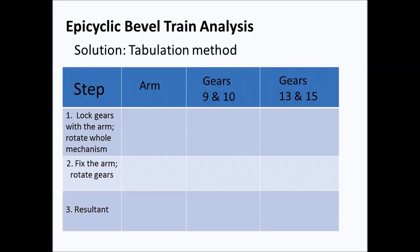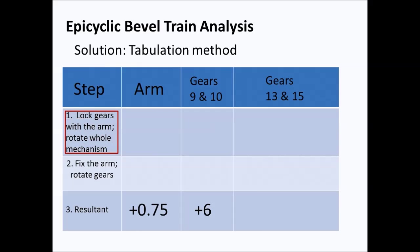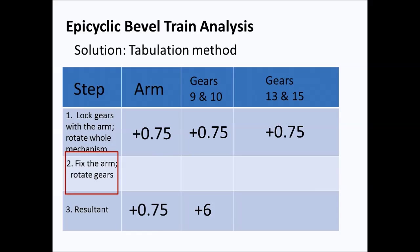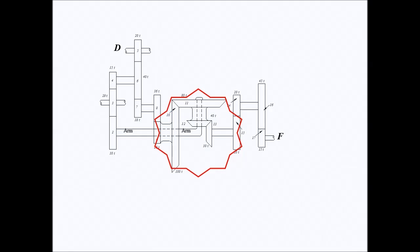Now we analyze the epicyclic bevel train using the tabulation method. We have 0.75 and plus 6 as earlier calculated. In Step 1, we place 0.75 in the arm and gears 9, 10, 13, and 15. In Step 2, we fix the arm (put 0), and for gears 9 and 10, we add 5.25 to 0.75 to get 6, which matches the earlier derived value.